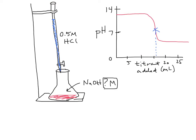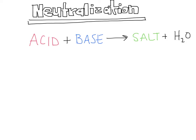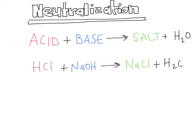A neutralization reaction is where an acid and a base react to make a salt and water. The classic example is hydrochloric acid reacting with sodium hydroxide to make NaCl — which is soluble and exists as discrete ions — and water. Pay attention to the reacting ratio: there is a one-to-one ratio between HCl and NaOH. That's important because when we get to calculations, stoichiometry and molarity kick in.